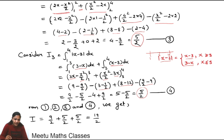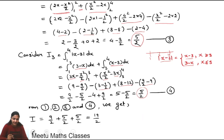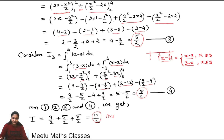Since I = I₁ + I₂ + I₃, adding the answers: 9/2 + 5/2 + 5/2 = 19/2. So the final answer is 19/2.